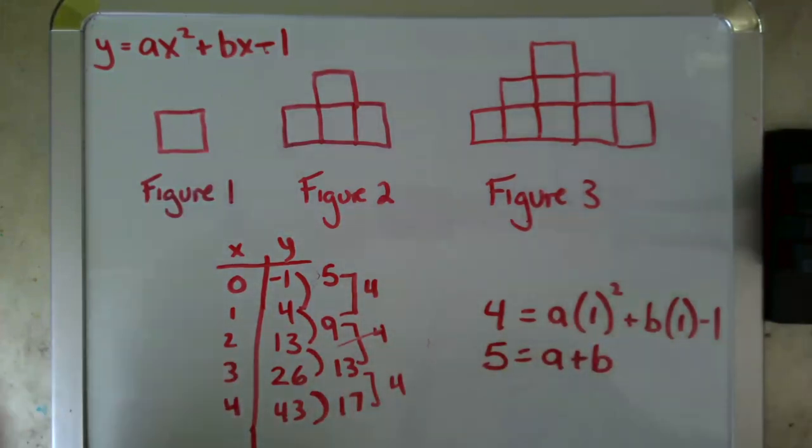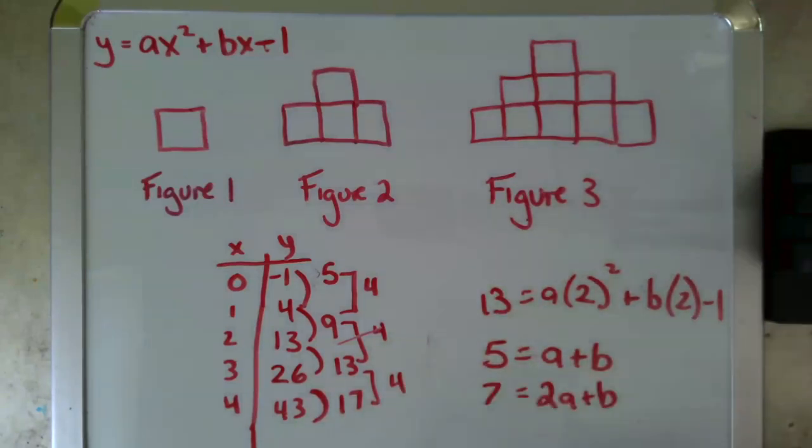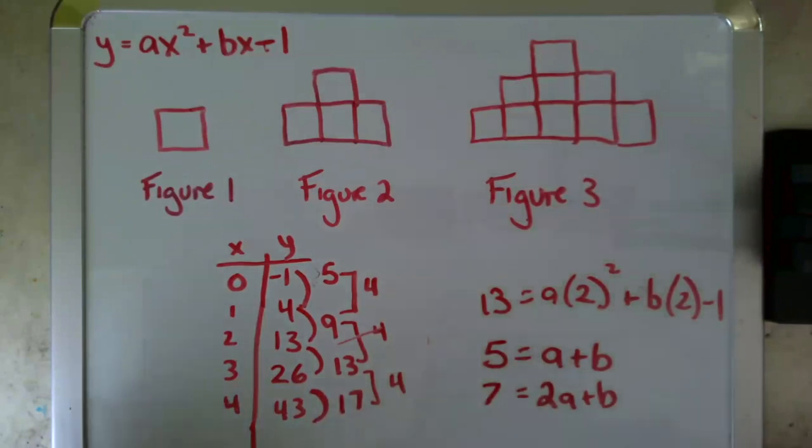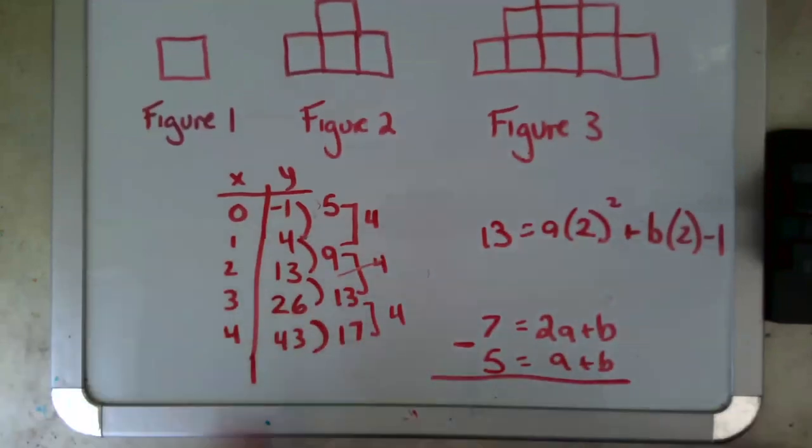Now I would do it again with my x equals two. So 13 equals a times two squared plus b times two minus one. And I would simplify that equation to 14 equals four a plus two b. And maybe I would divide that whole equation by two to find now I have a b in my top equation and a b in my bottom equation. So I'm going to continue solving by subtracting one equation from the other. I'm actually going to rewrite them so that my subtraction winds up with positive numbers. So I've just stacked them in the other direction. Now I'm going to subtract.